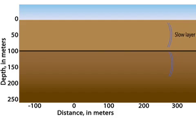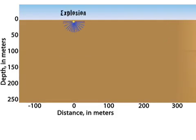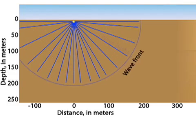When an explosion or impact occurs at or near the surface, waves travel away in all directions. In a uniform medium, they would travel straight paths away from the source.